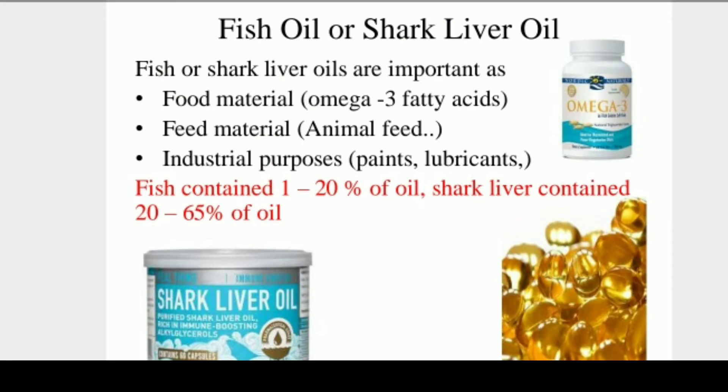Fish oil and shark liver oil are important as food material, like animal feed, and for industrial purposes like paints and lubricants. Fish oil and shark liver oil also contain omega-3 fatty acids.